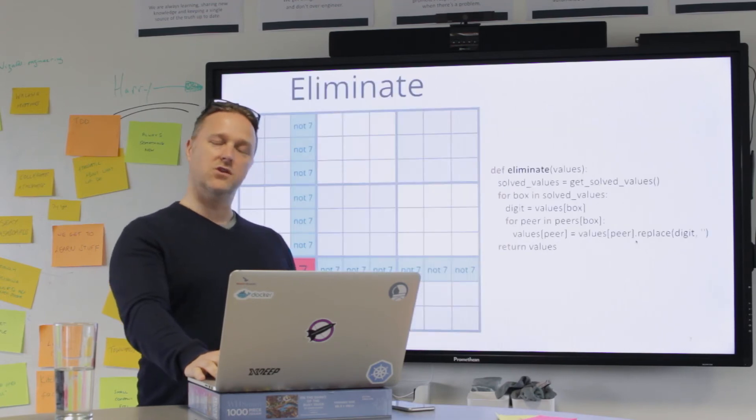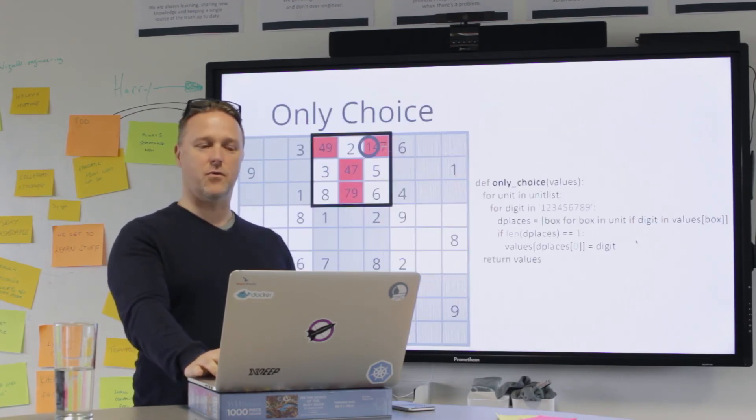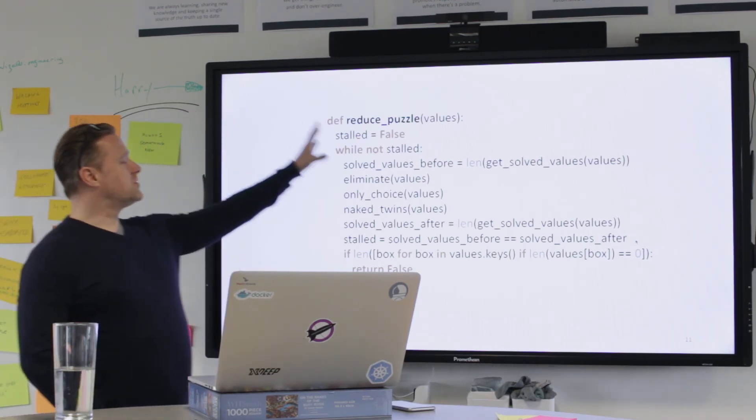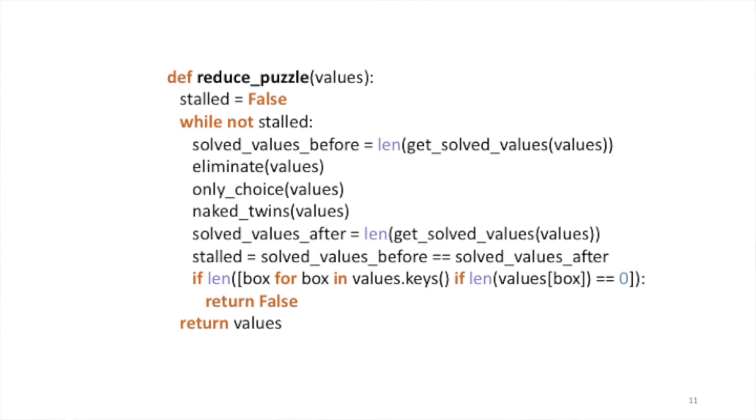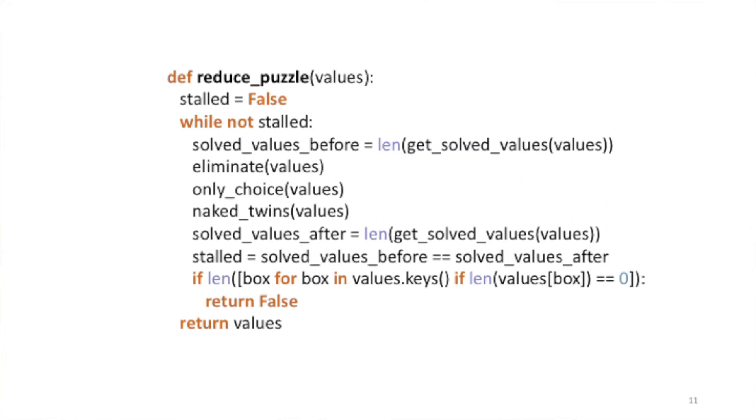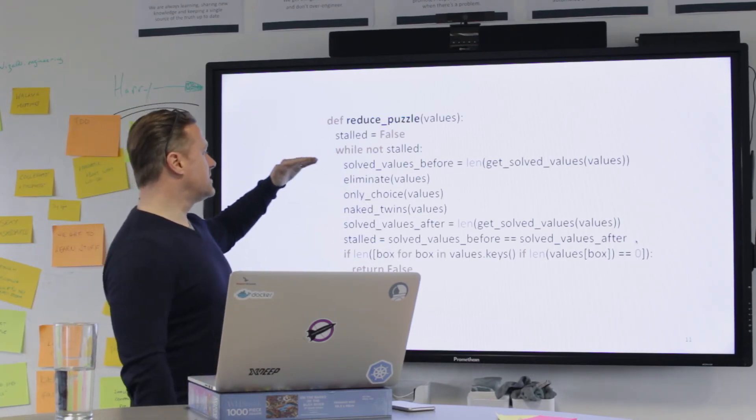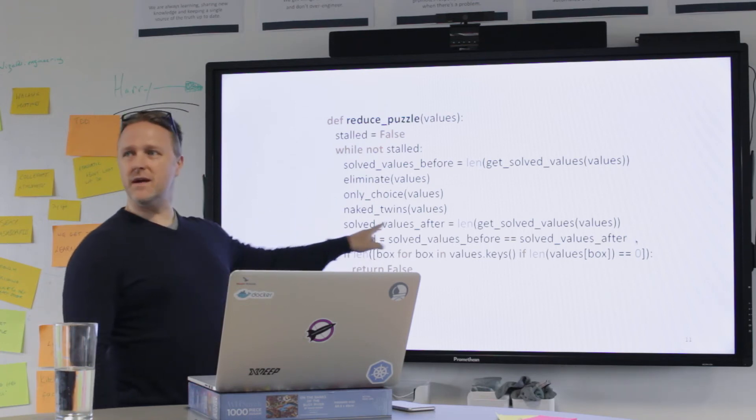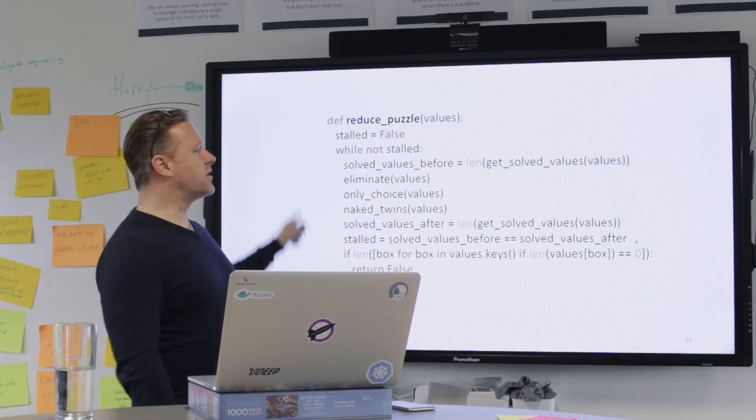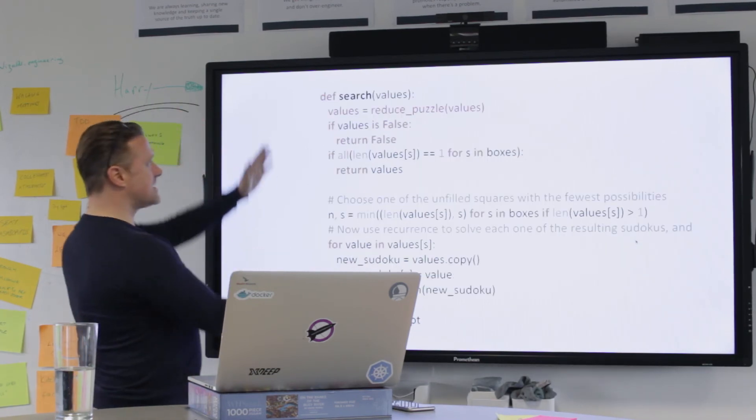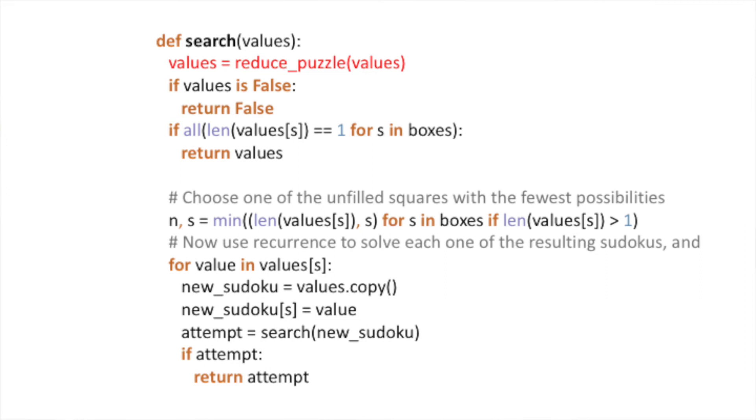And so what we end up with is this function reduce puzzle, which just loops around this stuff until it can't go any further. And that makes the problem much smaller. So this reduce puzzle thing which runs eliminate, only choice, naked twins, and then sees whether it's made any progress or not. And if it has, it goes around again. We run that as part of our search. So this is that original search function again, but just running reduce puzzles first.